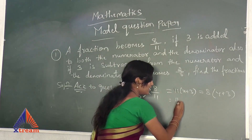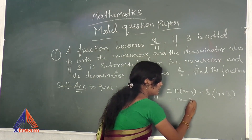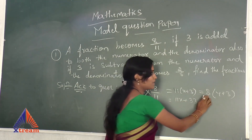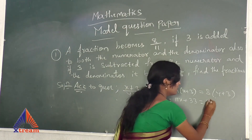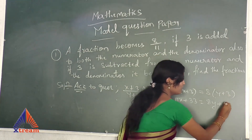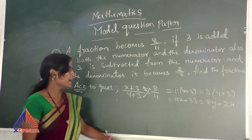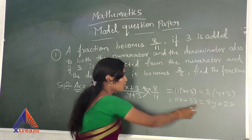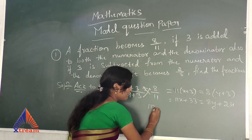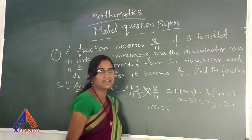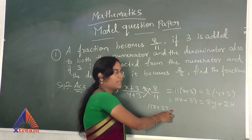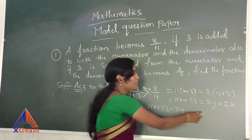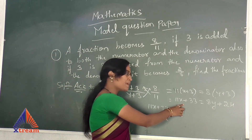Now remove the bracket by multiplying. 11 into X plus 11 into 3 is equal to 8 into Y plus 8 into 3. That gives 11X plus 33 equals 8Y plus 24. By bringing 8Y and 24 to the left side, 8Y becomes minus 8Y and plus 24 becomes minus 24.